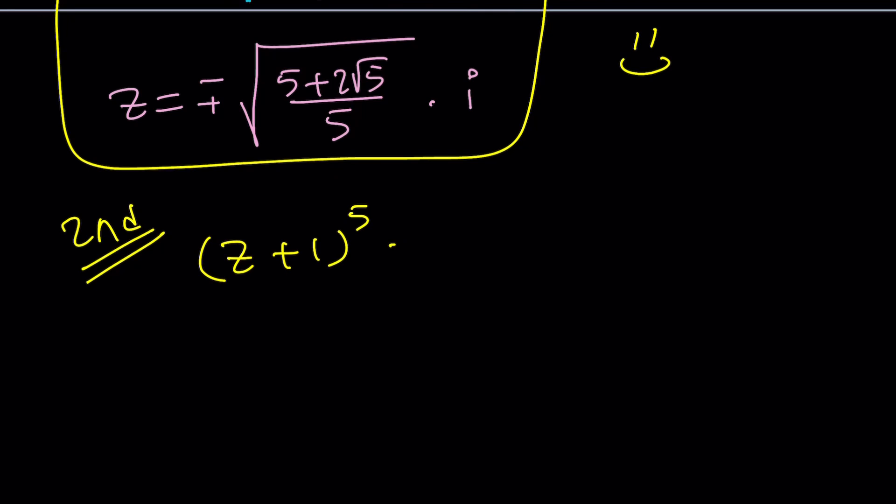So for my second method, I want to go ahead and set these equal to each other. Obviously, that's the original problem. And then I'm going to divide both sides by z minus 1 to the 5th. So it's going to look like this. And of course, z should not be 1. And as you know, z equals 1 is not a solution.